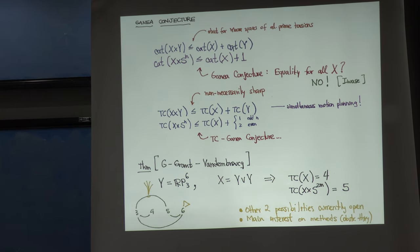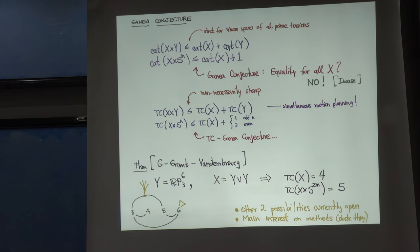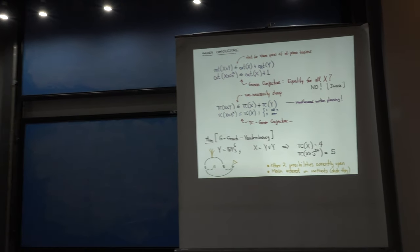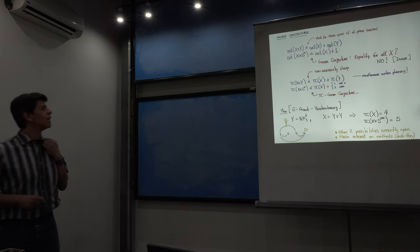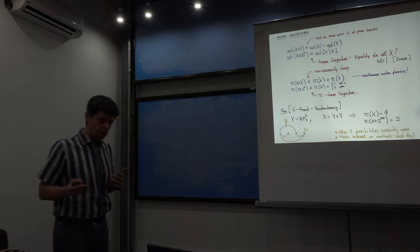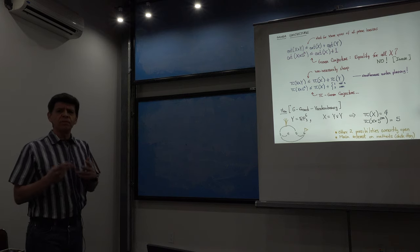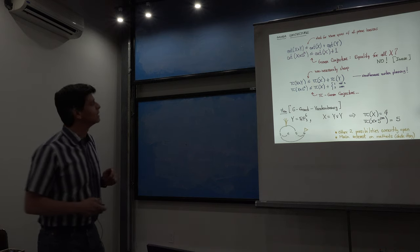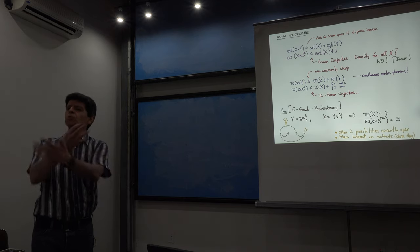The Ganea conjecture is a well-known conjecture. It is already known what the answer is. It basically says: it is quite easy to see that category is sub-additive — the category of a Cartesian product is bounded from above by the sum of the categories of the factors. You don't have to go very far to find examples where this is a strict inequality, for instance by taking Moore spaces of relative prime torsions.